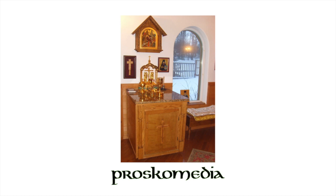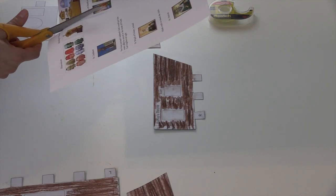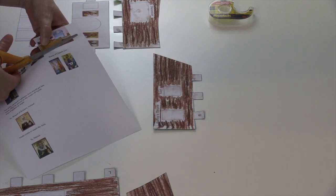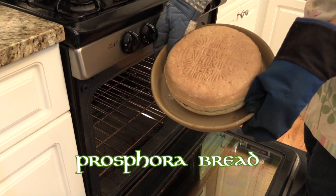Find the piece that says Proskemedia or Table of Preparation and cut it out. What do you think happens on this table? The priest prepares the gifts of Prospera bread and wine.